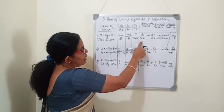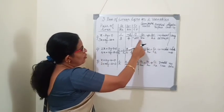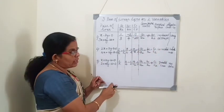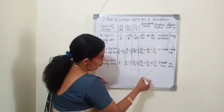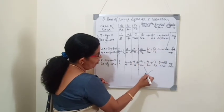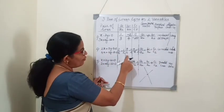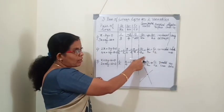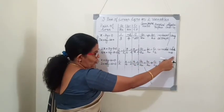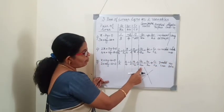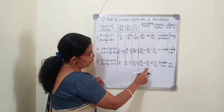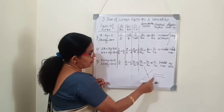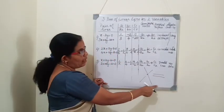Summary: if a1 by a2 is not equal to b1 by b2, no need to check c1 by c2 — directly the lines intersect at one point, giving a unique solution. If all ratios are equal, lines are coincident with infinitely many solutions. If a1 by a2 equals b1 by b2 but not equal to c1 by c2, the lines are parallel, there is no solution, and it is inconsistent.